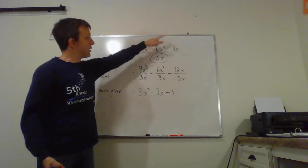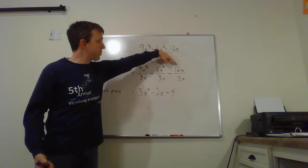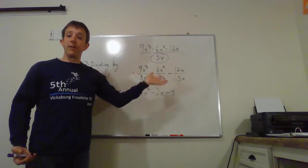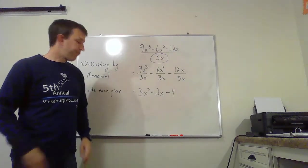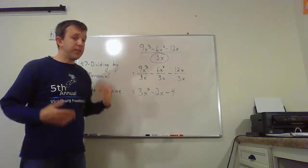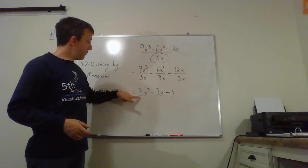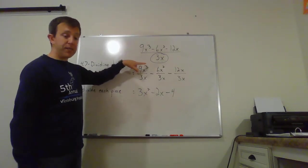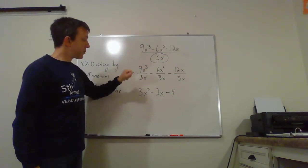I just split it up. I take each thing on the top, 9x cubed, 6x squared, and 12x, and I divide them all separately by 3x. So this really is something we did earlier in this chapter. 9 divided by 3 is 3, and remember to subtract your exponents. So 3 minus 1 gives me x squared.